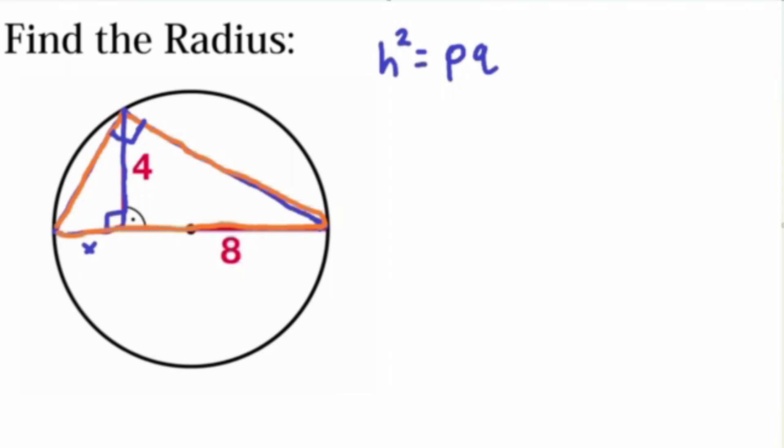So this is perfect for us, since we have one variable to solve for, since we have our h squared, which is 4. And then our p, I'll just name it at 8, and then our x will be our q. So now we can solve for x to find this value here. So we get that 4 squared, 16 is equal to 8x, divided by 8, and we get that our x is equal to 2.